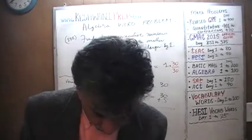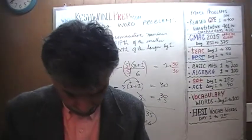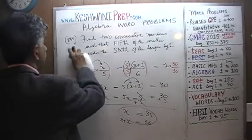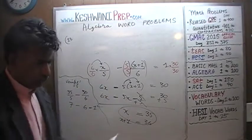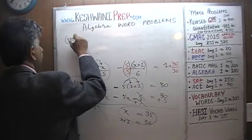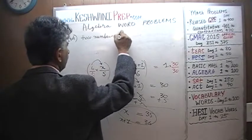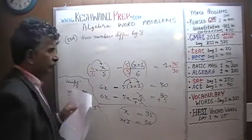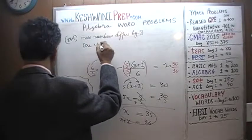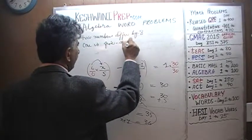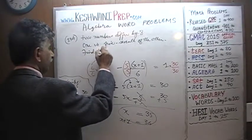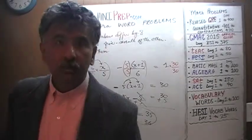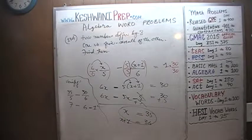Let's do one more — problem number 134. We are told two numbers differ by 8, in other words their difference is 8. We are also told that one is 5 sevenths of the other. Our job is simply to find them — what are those two numbers? Let's get going.